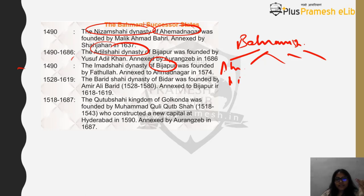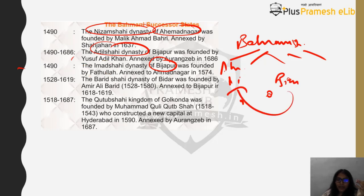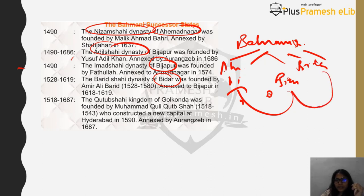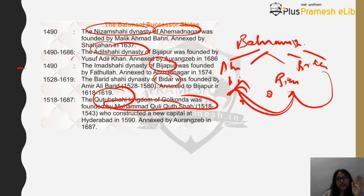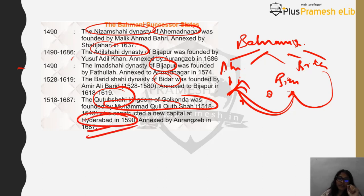In Berar there was the Imad Shahi Dynasty, founded by Fatullah Imad-ul-Mulk, which later got merged with Ahmadnagar. Then came the Barid Shahi Dynasty of Bidar, founded by Amir Ali Barid, which later merged with Bijapur. Finally, Bijapur itself merged with Ahmadnagar. The last successor state is the Qutb Shahi Dynasty of Golkonda, founded by Muhammad Quli Qutb Shah, who constructed a new capital at Hyderabad and was also later annexed by Aurangzeb.